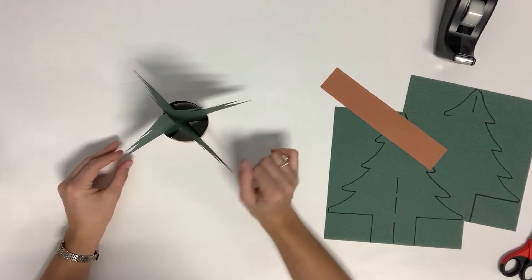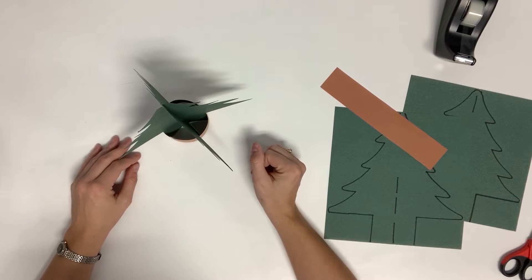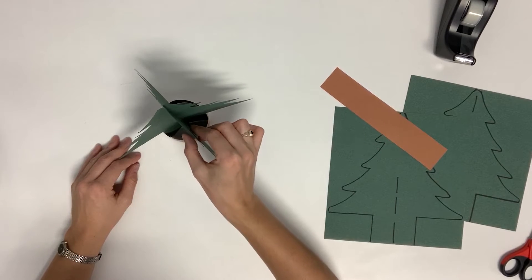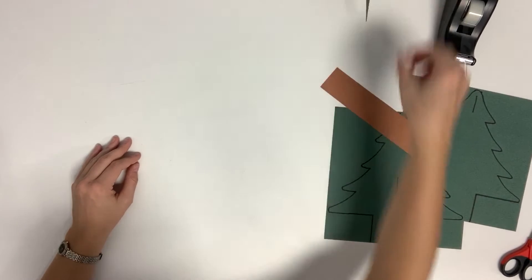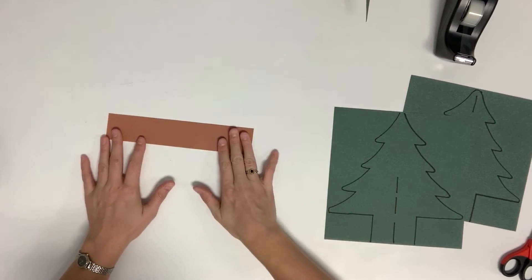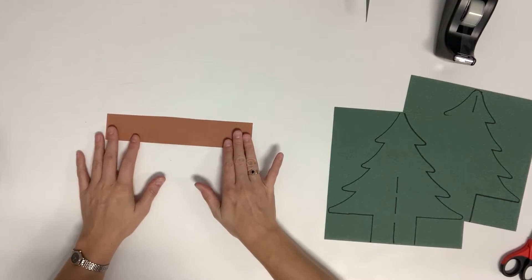Here's the Christmas tree that we're going to be making today. We'll take a moment to gather all of our materials together. First, I have a brown strip of paper that will be used as the base.